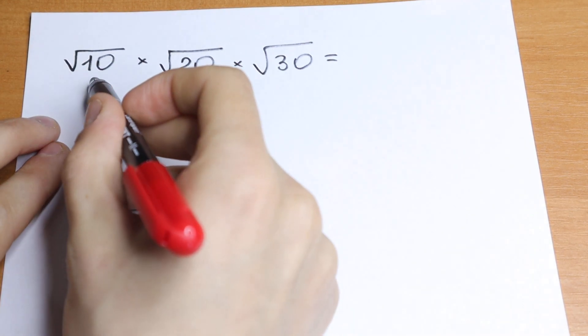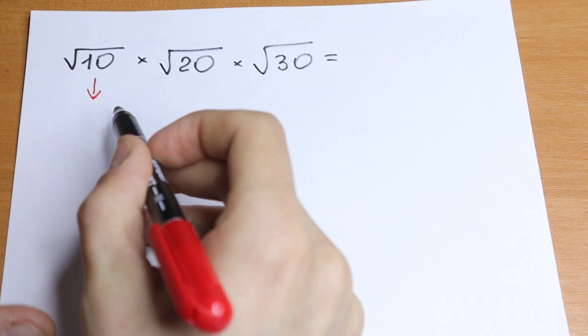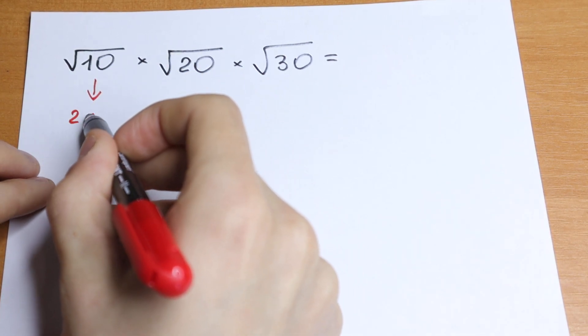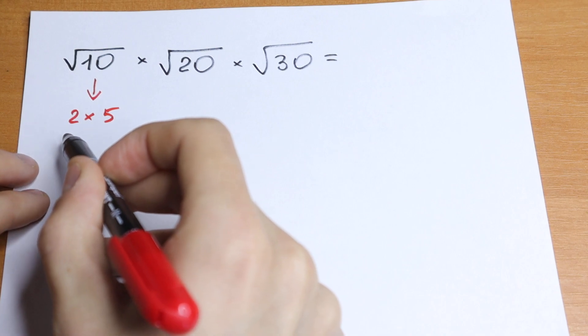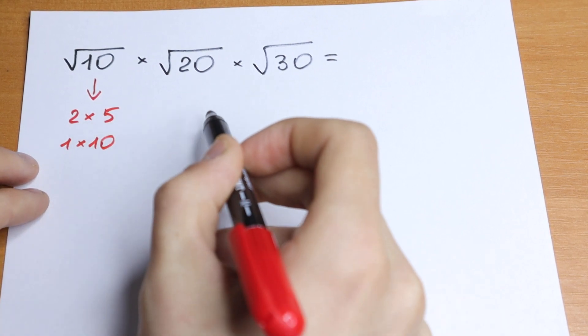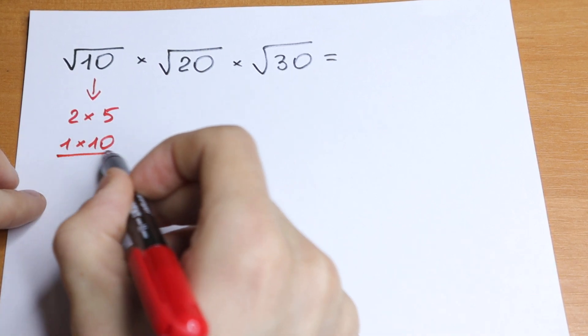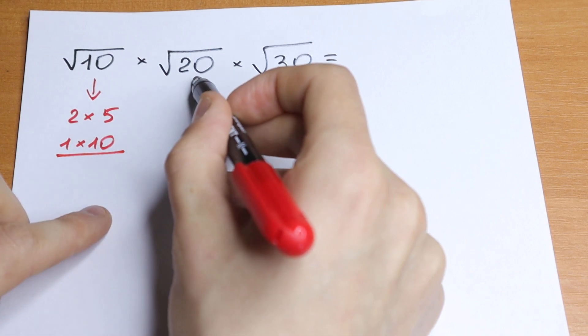First of all, we need to know that we can express 10 in two ways. We can express 10 as 2 times 5 and as 1 times 10. We need this one, and I'll show later why.